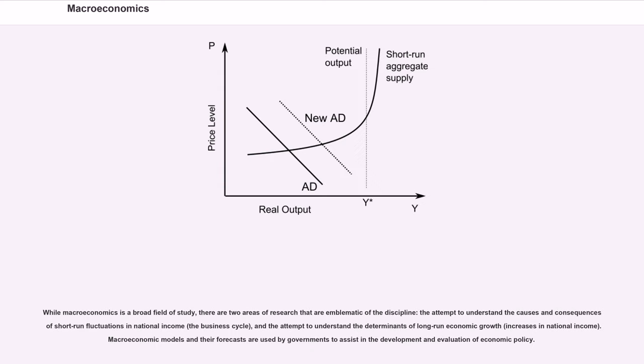While macroeconomics is a broad field of study, there are two areas of research that are emblematic of the discipline: the attempt to understand the causes and consequences of short-run fluctuations in national income (the business cycle), and the attempt to understand the determinants of long-run economic growth, increases in national income.